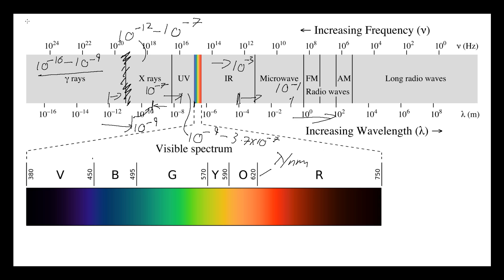Then x-rays, we're going from 10 to the minus 12 to 10 to the minus 7. Then we've got UV going from 10 to the minus 9 up to the start of the visible spectrum.